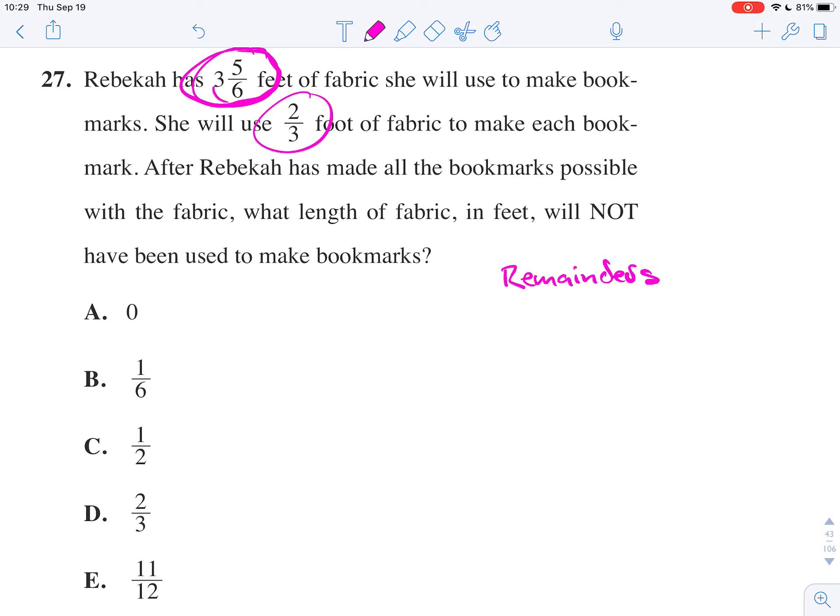That's going to be 6 times 3 is 18, plus 5 is 23, over 6. And we are going to divide that by 2/3.